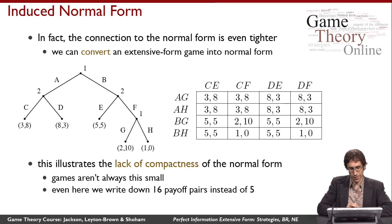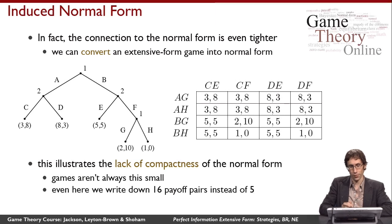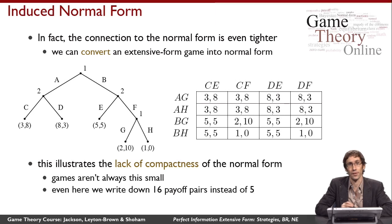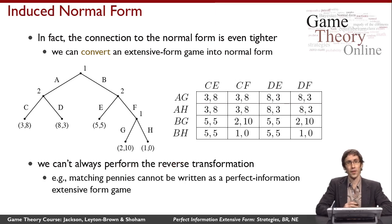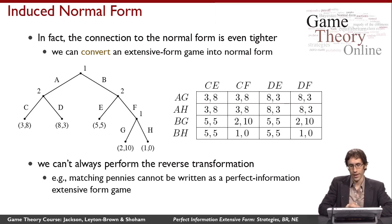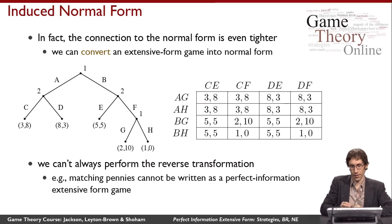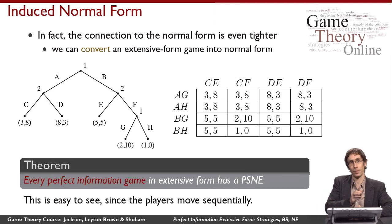This blowup can be a problem because it's actually exponential. It doesn't look bad here since the game is very small, but as the game tree grows, this blowup can be profound — in practice it may be very difficult to write down the induced normal form. Also, we can't always do the transformation in reverse: given a normal form game, we generally cannot make a perfect information extensive form game out of it, because general normal form games lack the repeated-payoff structure that extensive form games require.